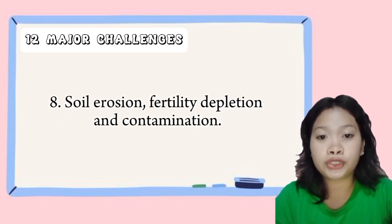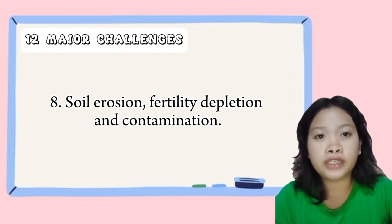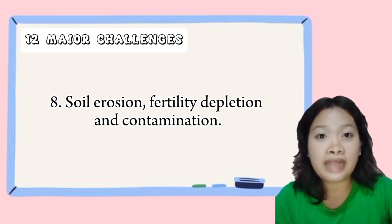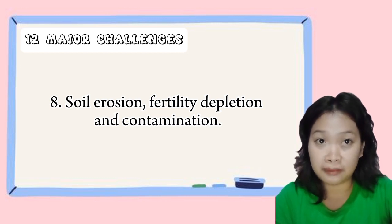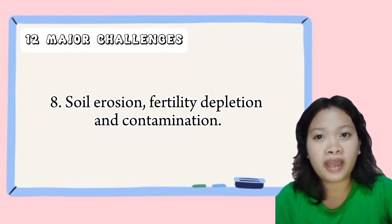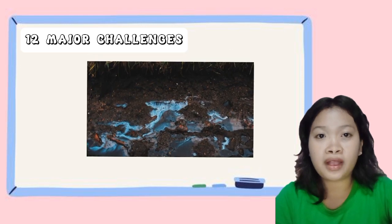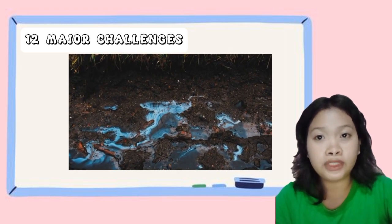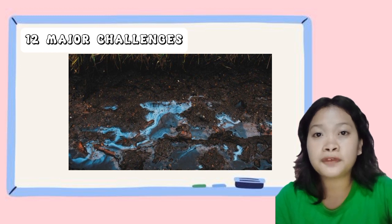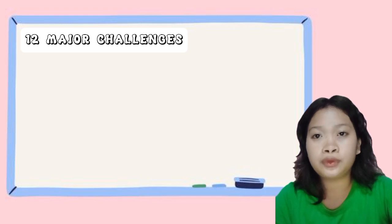Next is soil erosion, fertility depletion, and contamination. Soil erosion, fertility depletion, and contamination can reduce the productivity of land and harm ecosystems. Soil erosion is caused by deforestation, intensive farming practices, and other activities that remove vegetation from the land. Soil contamination can occur when toxic chemicals or heavy metals are spilled or leaked into the ground. The effects of soil erosion and contamination include reduced soil fertility and harm to ecosystems.